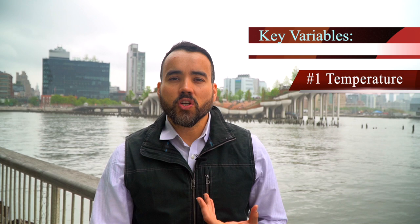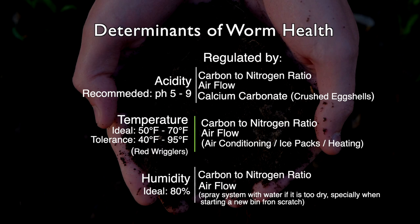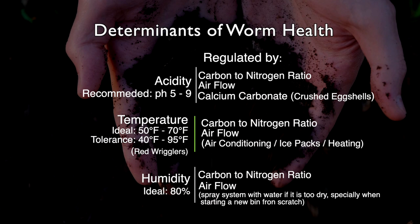So let's start with three basic variables: number one is temperature, number two is acidity, and number three is humidity. There are also two basic elements that will help you regulate these variables, and those are carbon-to-nitrogen ratio and airflow. So you have three main variables — acidity, temperature, and humidity — and then you have two things that you can really manipulate in order to impact those variables in a positive way: airflow and carbon-to-nitrogen ratio.